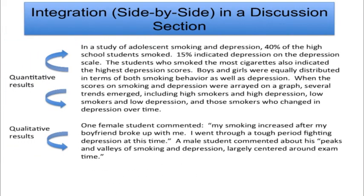So how does integration actually occur? One way you see it in mixed methods studies is in the discussion section of a journal article, where researchers often put side by side the quantitative and qualitative results. In this illustration — a study of adolescent smoking and depression — the quantitative results from the project are first stated, and then the qualitative results are stated in terms of quotes. So we're seeing an integration of both results in a discussion section, side by side.